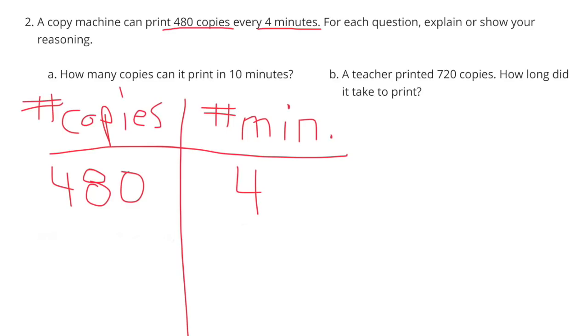I created a table and I put 480 copies on the left and 4 minutes on the right. To figure out how many copies the copy machine can make in 1 minute, I divided the 4 minutes by 4 and I got 1 minute. I also needed to divide the 480 copies by 4 and I got 120. So in 1 minute, the copy machine can make 120 copies.